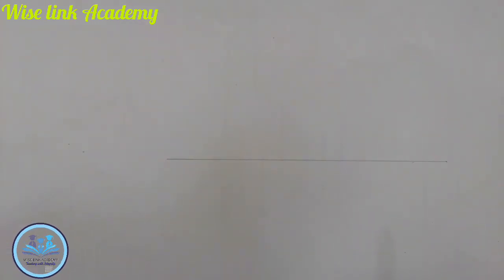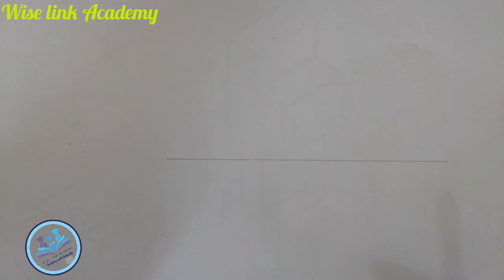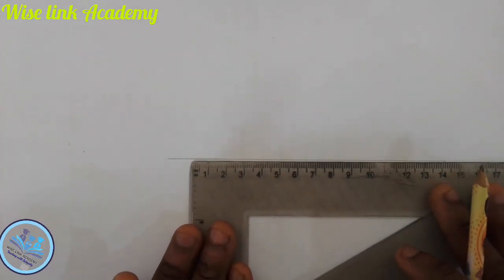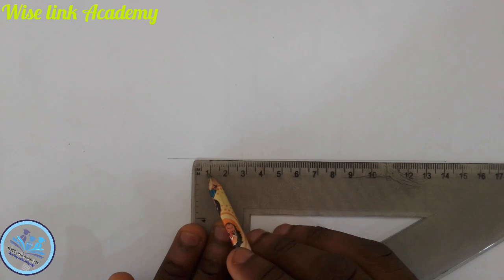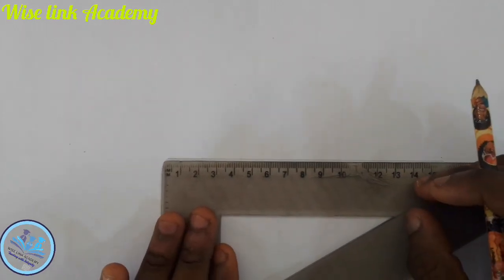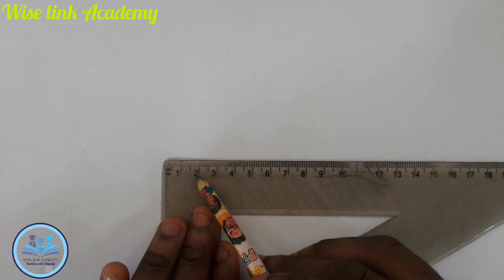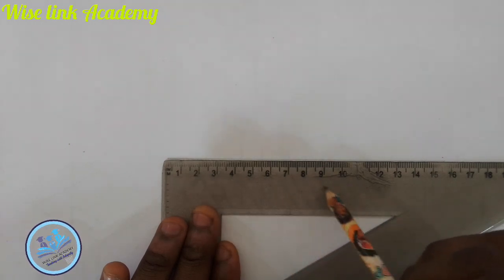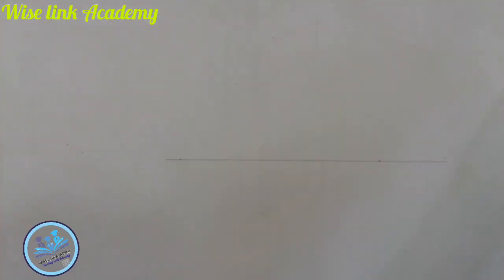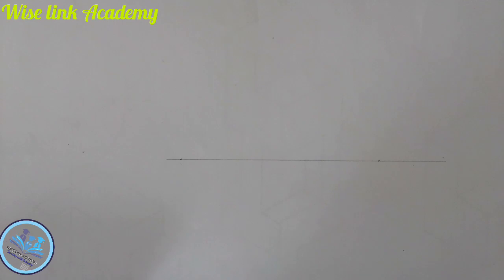After drawing your horizontal line, the next thing is to measure any distance of your choice — make sure it is an even number. So let me measure 10. From here to here is my 10 — zero, one, two, three, four, five, six, seven, eight, nine, ten. My point ten is from here to here.